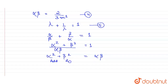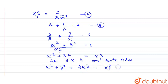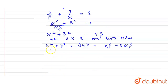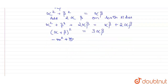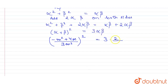Add 2·alpha·beta on both sides. Therefore, alpha² + beta² + 2·alpha·beta = alpha·beta + 2·alpha·beta, which gives (alpha + beta)² = 3·alpha·beta. Now we replace our values: [(−m² + 4m) / 3m²]² = 3 × (2 / 3m²).